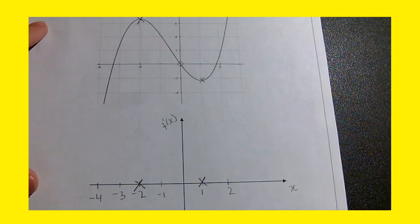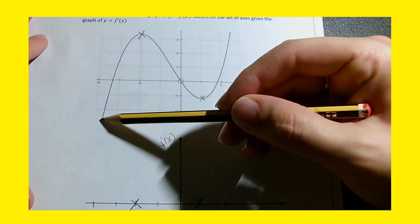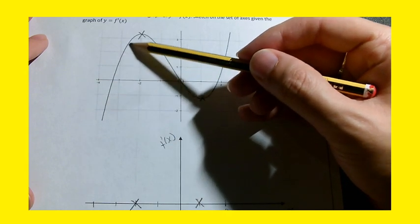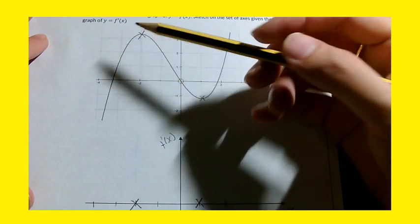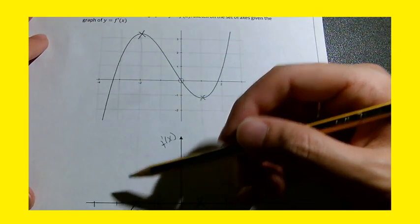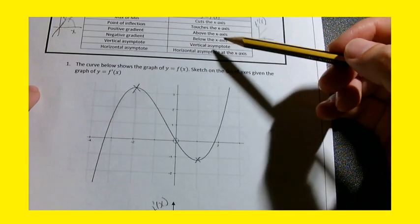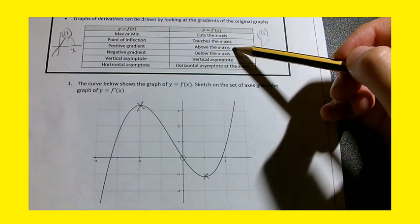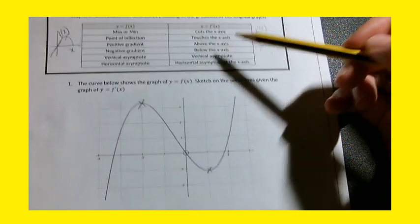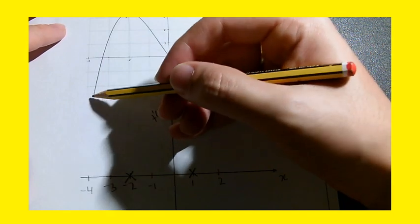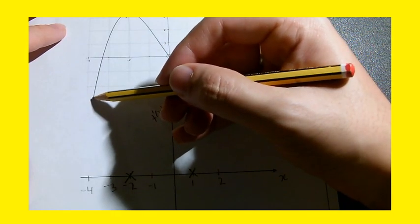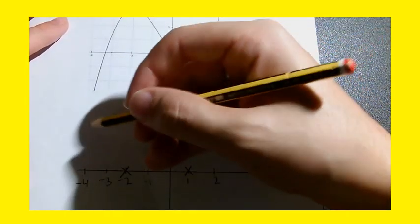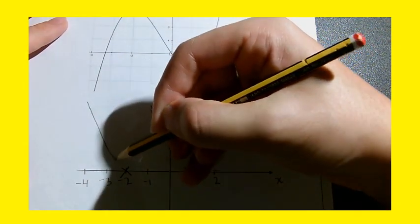Now, what else can I see here? In this graph, I've clearly got an increasing gradient, a positive gradient. When I've got a positive gradient that means I'm going to have on my derivative graph a curve which is represented above the x-axis. From roughly minus 4 all the way to minus 2 I'm going to have a positive curve like that.